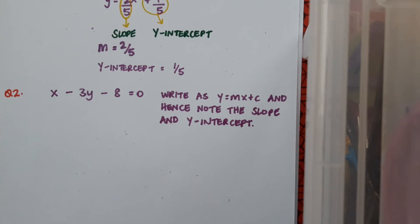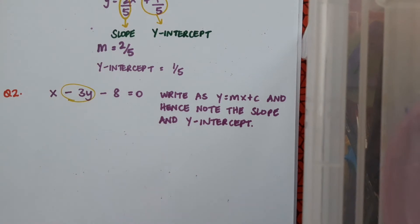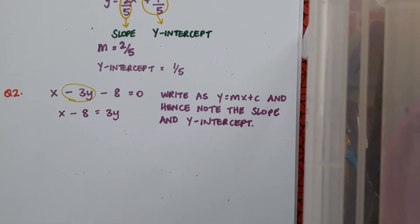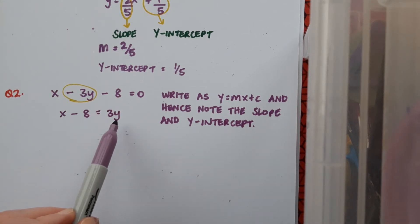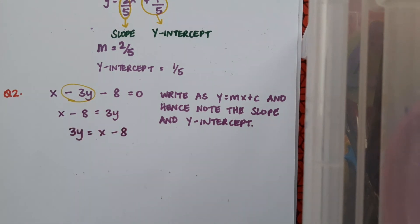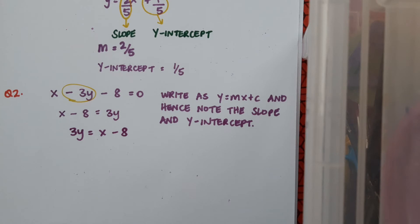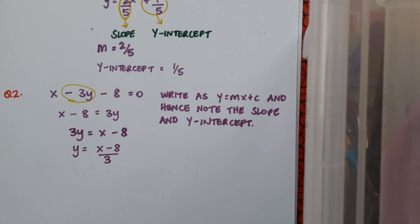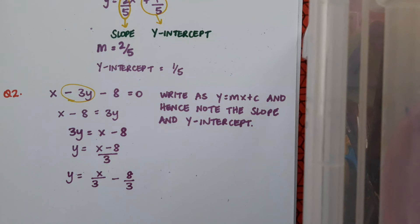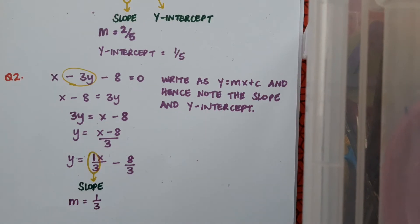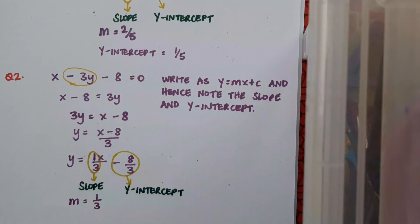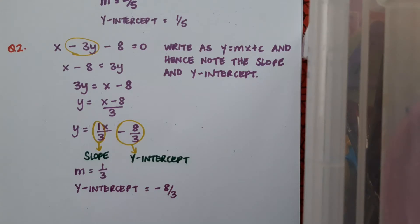The y is currently negative, so I'll bring it over to the right-hand side, giving me x minus 8 equals 3y. Then reading it in reverse: 3y equals x minus 8. Now I get y by itself — 3 is the coefficient, so it comes across and divides. I get y equals x minus 8 over 3, then split that up. I can write a 1 in front of the x to make reading off the slope easier: y equals 1 over 3 x minus 8 over 3. So m equals 1 over 3 and the y-intercept is minus 8 over 3. It's very important to include that minus sign.